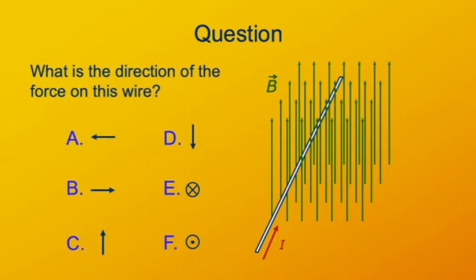Now, we see a current flowing into the screen through a magnetic field which is directed up. What is the direction of the force the field will exert on the current? Pause the video and answer for yourself before I talk you through it. Okay, vector IL is into the screen in the direction of the current, and B, the magnetic field, is up. The right-hand rule tells us that IL cross B will be to the right. So that's choice B.